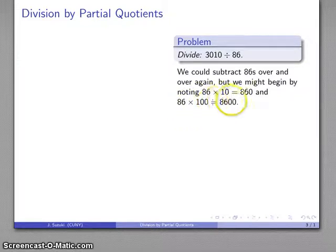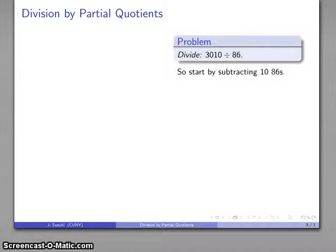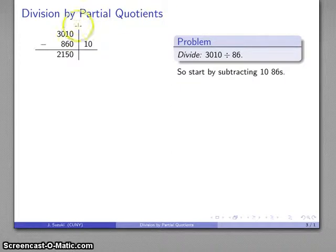86 times 10 is 860 and 86 times 100 is 8600. I obviously can't subtract this much, this is way too big, but I can certainly subtract 860. So I'm going to keep track of how many 86's I've subtracted. I have my initial dividend and I'm going to subtract 860. That's 10 86's and I have this left.